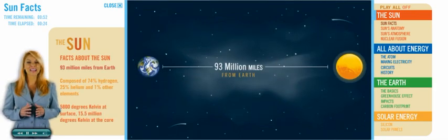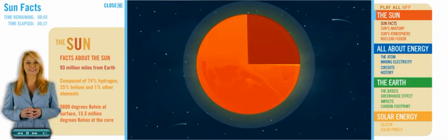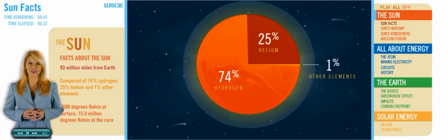The Sun is 93 million miles from Earth. It is composed of 74% hydrogen, 25% helium and 1% other elements.